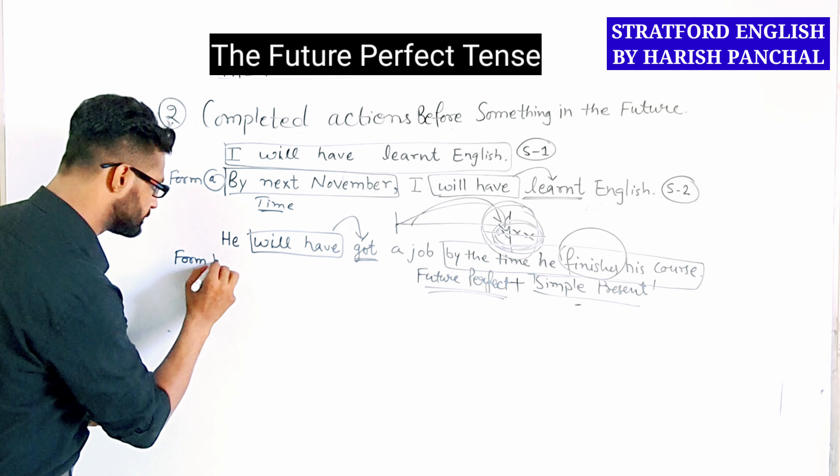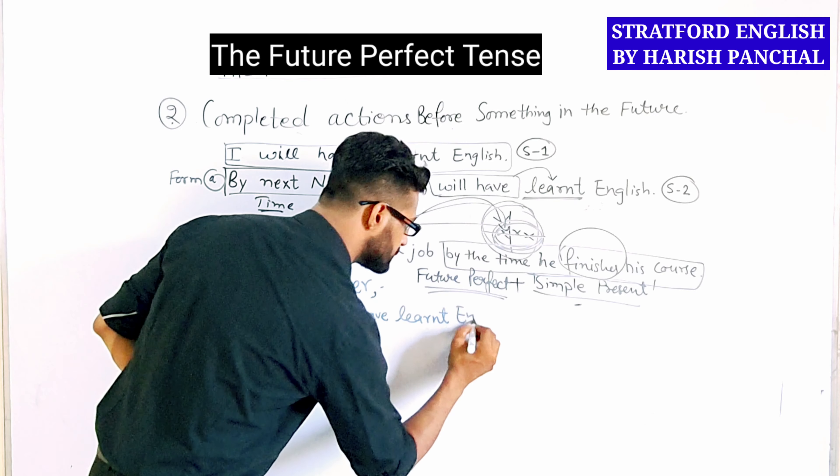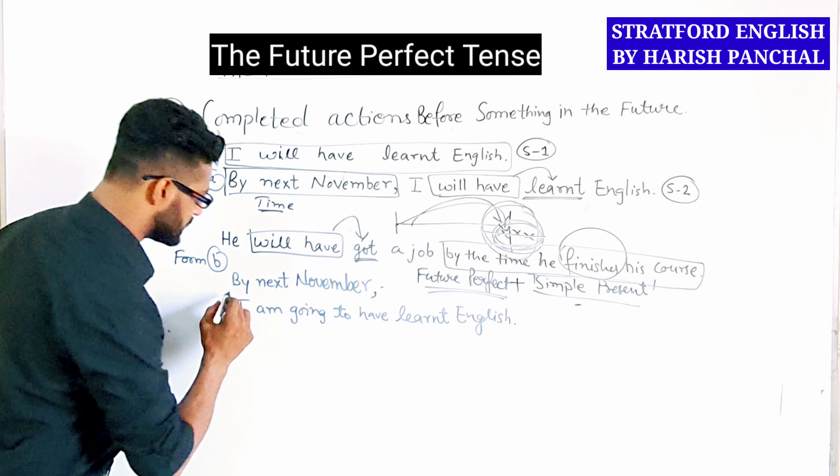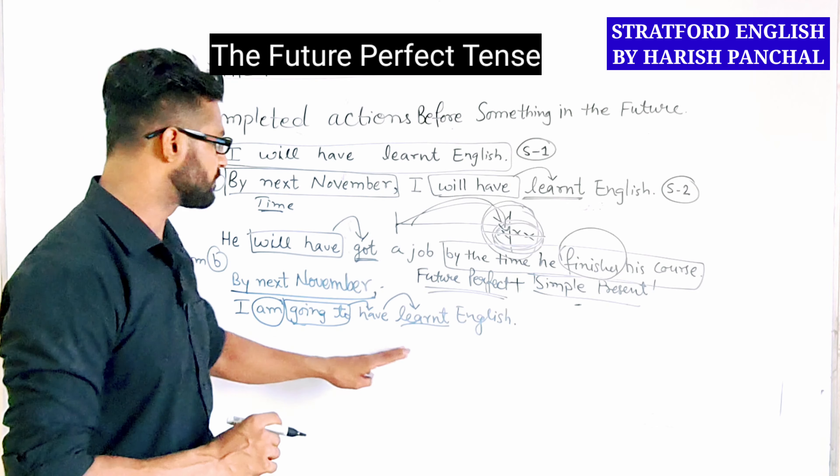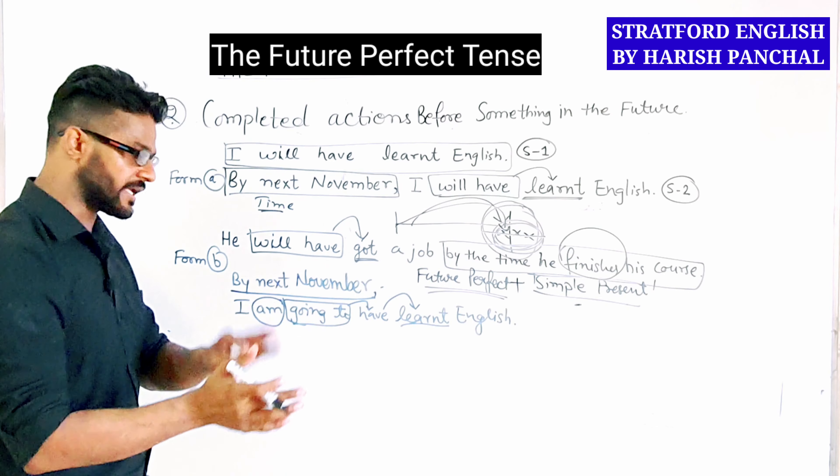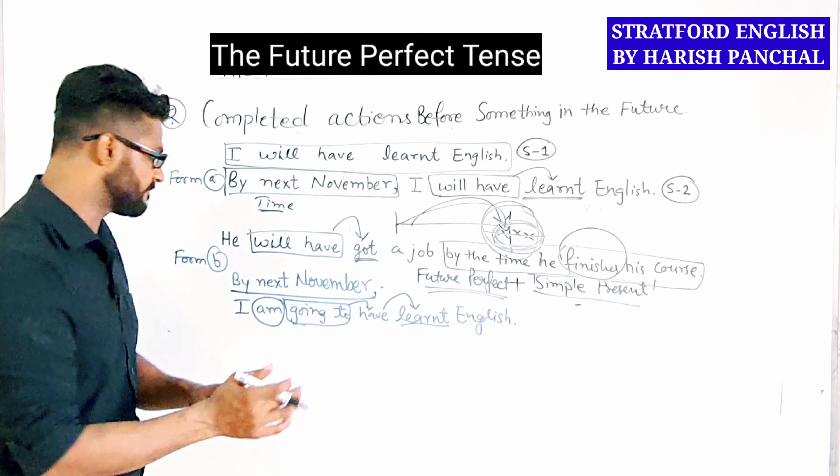Another example: 'He will have got a job by the time he finishes his course.' Here I have used 'will have' and the third form. The phrase 'by the time he finishes his course' uses simple present tense. Whenever you use a future tense and combine it with another time clause, simple present tense is always used in that clause. So this is a combination of simple present and future perfect tense.